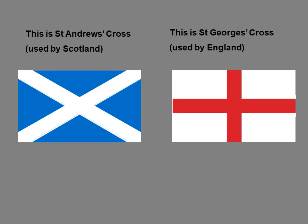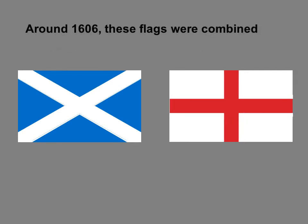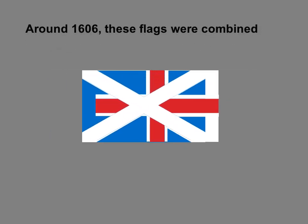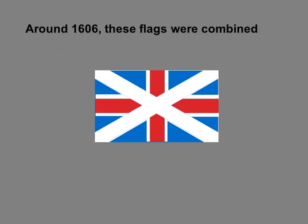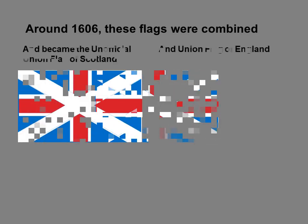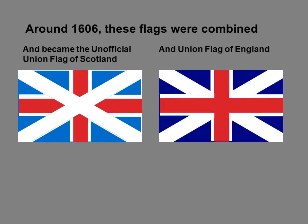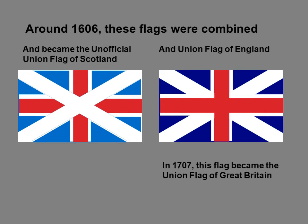This is St. Andrew's Cross used by Scotland, and this is St. George's Cross used by England. Around 1606 these flags were combined and became the unofficial Union Flag of Scotland and Union Flag of England.